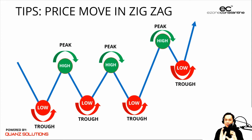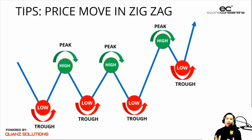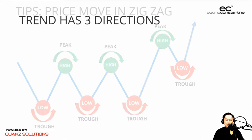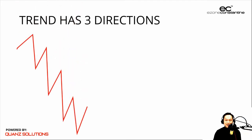By just understanding the high and the low, or the peak and the trough, we can combine this data to anticipate the trend. Yes — by just taking this data at the high and the low and combining it together, you can predict where the trend is going to go. Trend has three directions. Number one: downtrend.